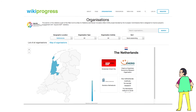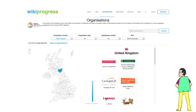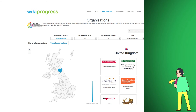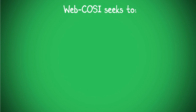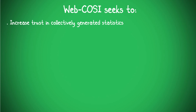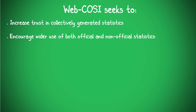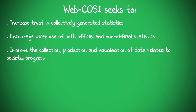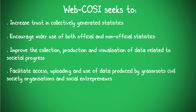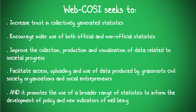Here are examples of companies that use data and statistics in smart ways to support their work. By engaging citizens, Web Cozy seeks to increase trust in collectively generated statistics, encourage wider use of both official and non-official statistics, improve the collection, production and visualisation of data related to societal progress, facilitate access, uploading and use of data produced by grassroots civil society organisations and social entrepreneurs, and promote the use of a broader range of statistics to inform the development of policy and new indicators of wellbeing.